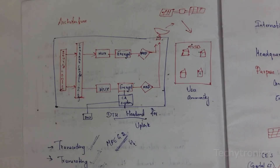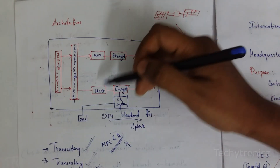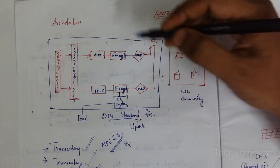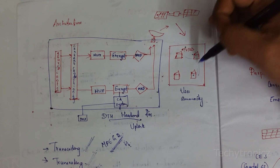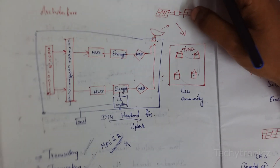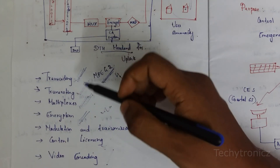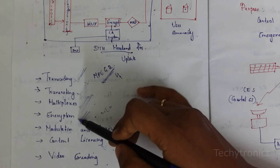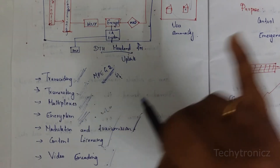The DTH headend architecture for uplink from sender to satellite includes the following parameters: transcoding, transrating, multiplexer, encryption, modulation and transmission, content licensing, and video encoding.